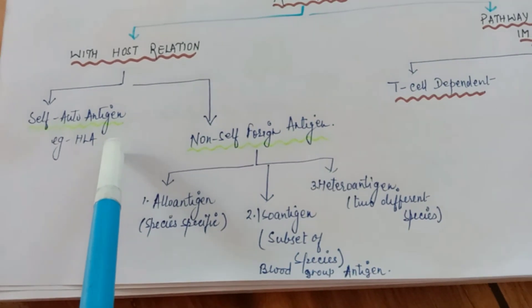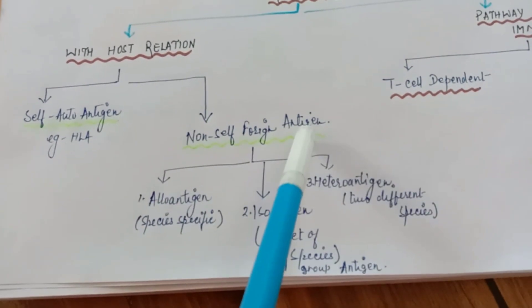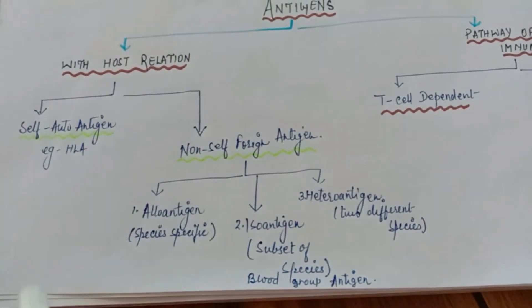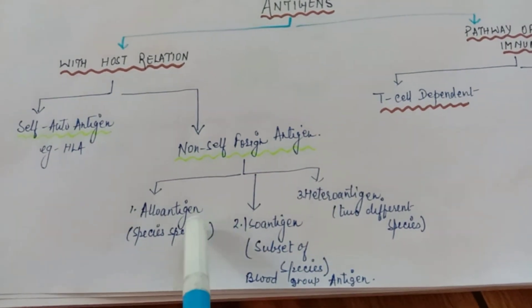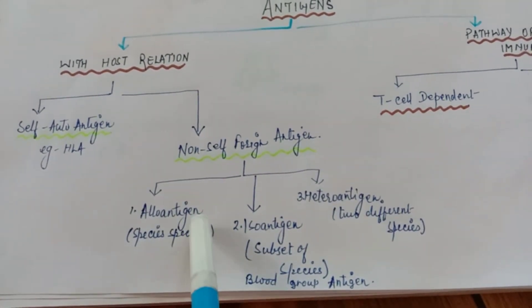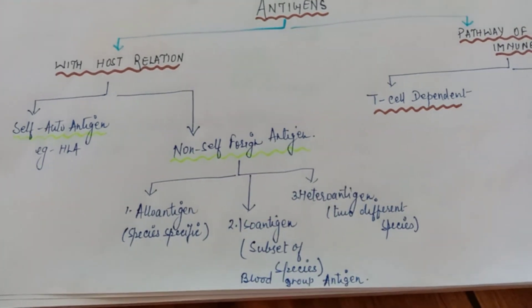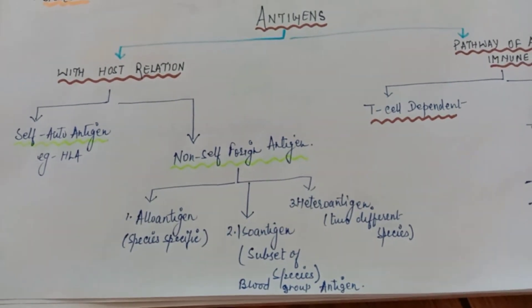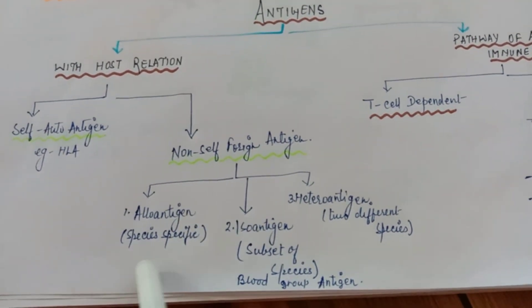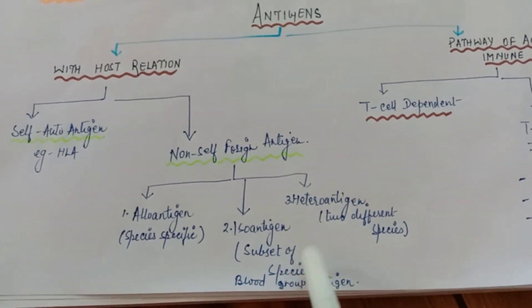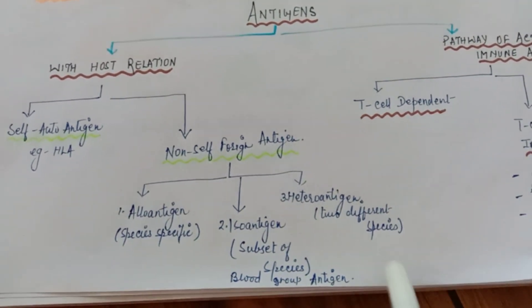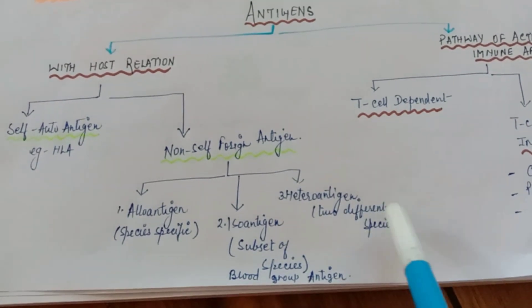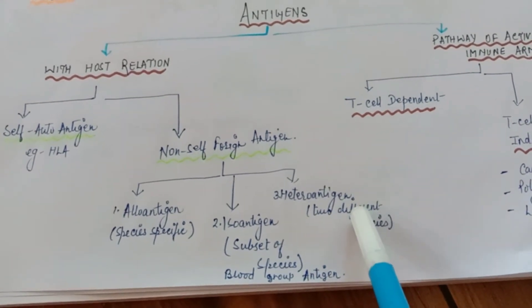Then is non-self or foreign antigen. This can be further classified as alloantigen, isoantigen, and heteroantigen. Alloantigen is species-specific, isoantigen is a subset like blood group antigen, heteroantigen is found in two different species.